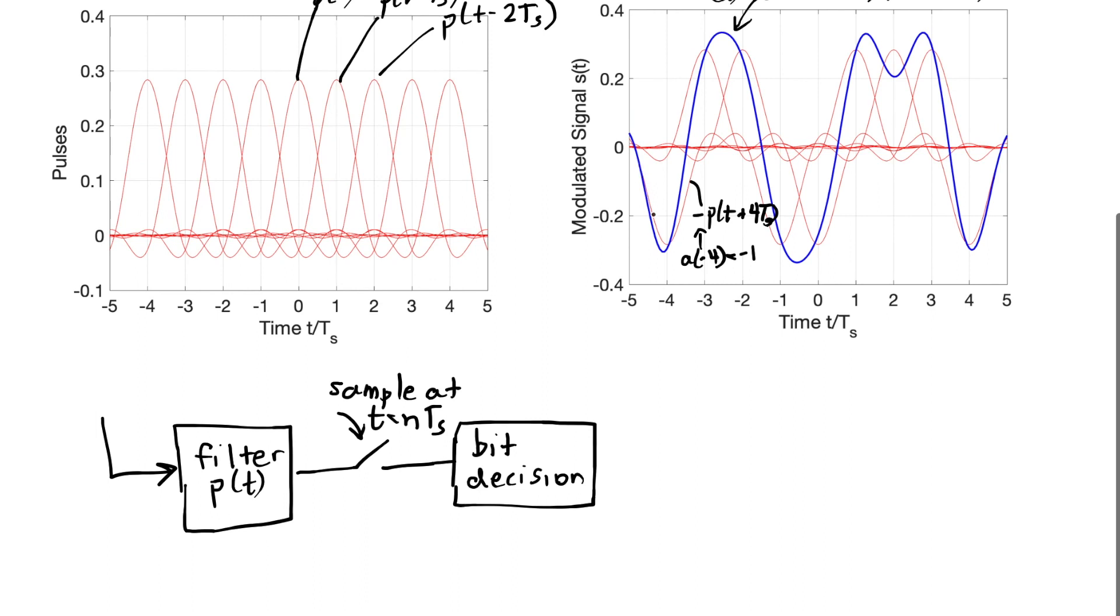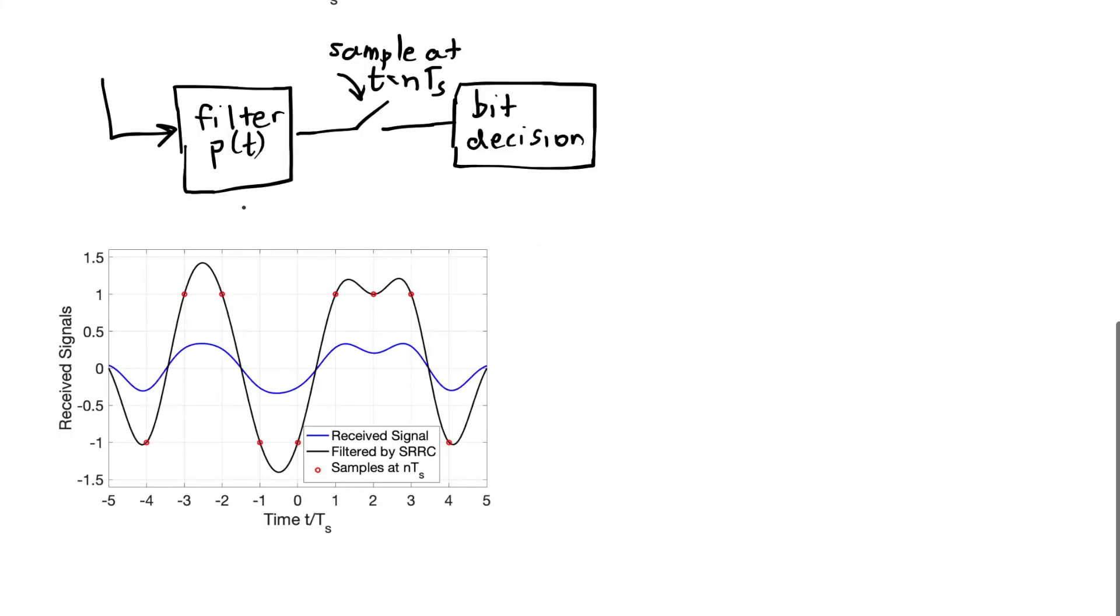So let's talk about what happens when I filter the signal with an impulse response of P of t. That is, I take this blue line and I convolve it with the square root raised cosine pulse shape. What I get out of that filter over here is this black line.